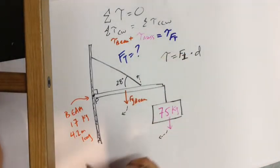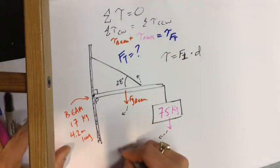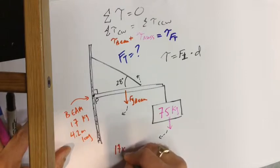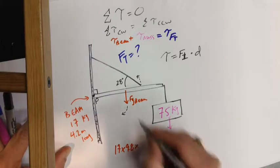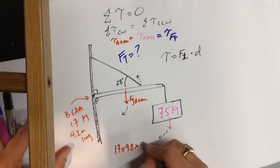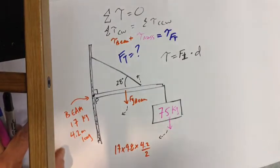the torque of our beam, the beam is 17 kilograms. So 17 times 9.8, that's the force of gravity on the beam. That force acts at half the beam's length, so 4.2 over 2. That force is already at right angles, so we don't need to do any adjustment to its angle.